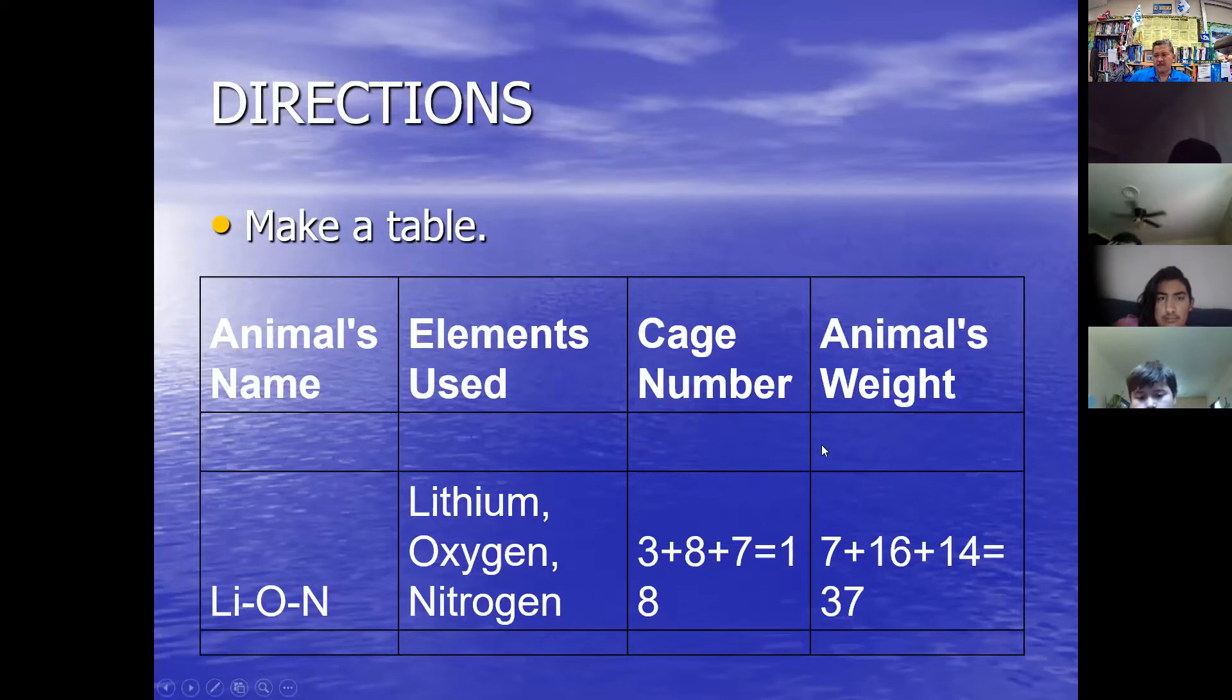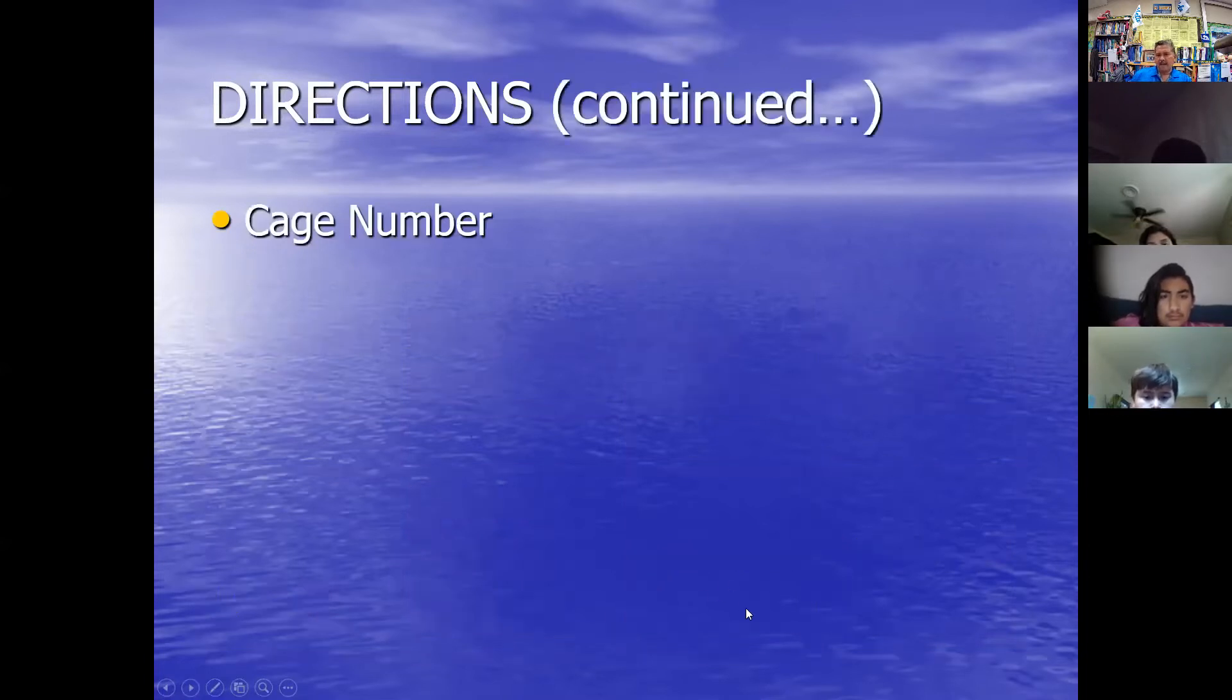The cage numbers are the atomic numbers and the animals' weights are the atomic weights. So the atomic weight of lithium is seven, the atomic weight of oxygen, round it off, of course, is 16. And nitrogen is 14. Add those up, you get 18, three plus eight plus seven.